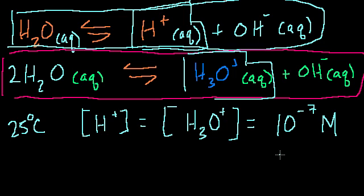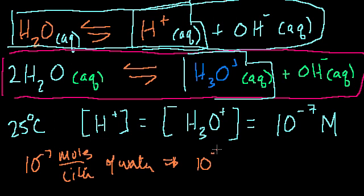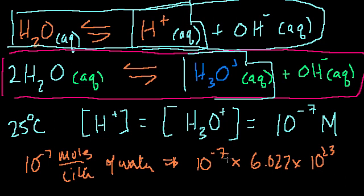So for every one liter of water, you have 10 to the minus 7 moles of hydronium ions. Which is still a pretty good number — it's 10 to the minus 7 times Avogadro's number, 6.022 times 10 to the 23. So you still end up with about 60 times 10 to the 16th power of molecules. It's just a small fraction of the total number of molecules that are actually these hydronium ions.